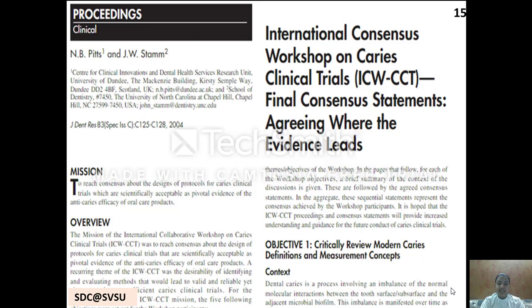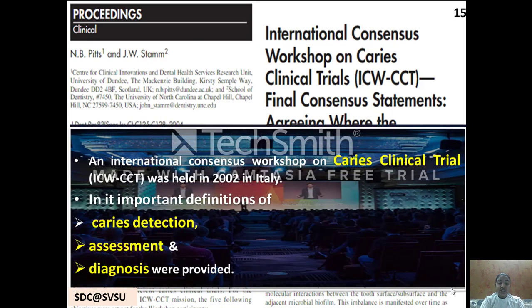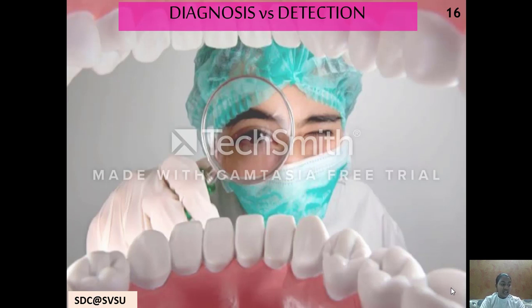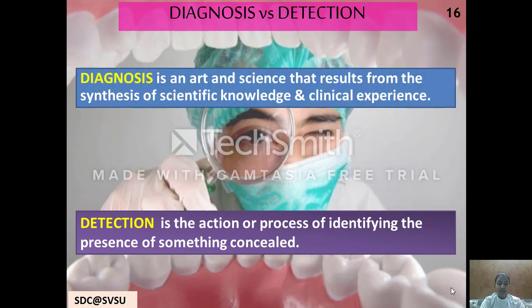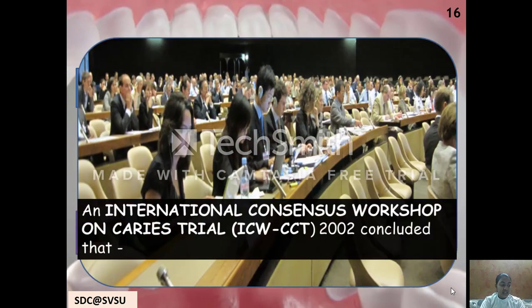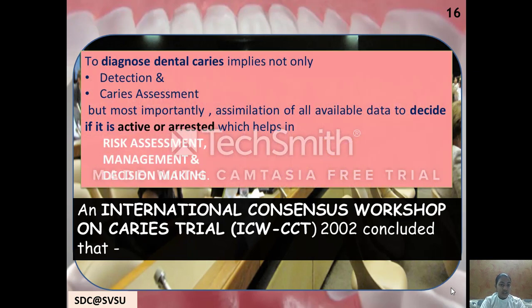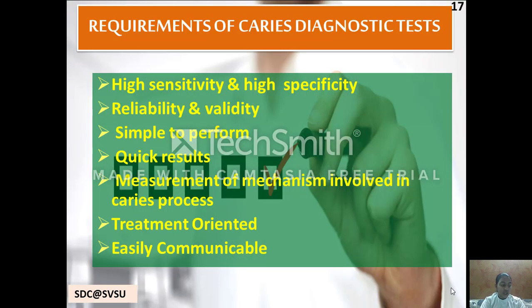The International Consensus Workshop on Caries Clinical Trials was held in 2002 in Italy, where important definitions of caries detection, assessment and diagnosis were provided. Two terms, detection and diagnosis, are interrelated. Detection is the action or process of identifying the presence of something concealed, whereas diagnosis is an art and science that results from the synthesis of scientific knowledge and clinical experience. The consensus concluded that assimilation of all available data is needed to decide if a lesion is active or arrested, which helps in risk assessment, management and decision making.